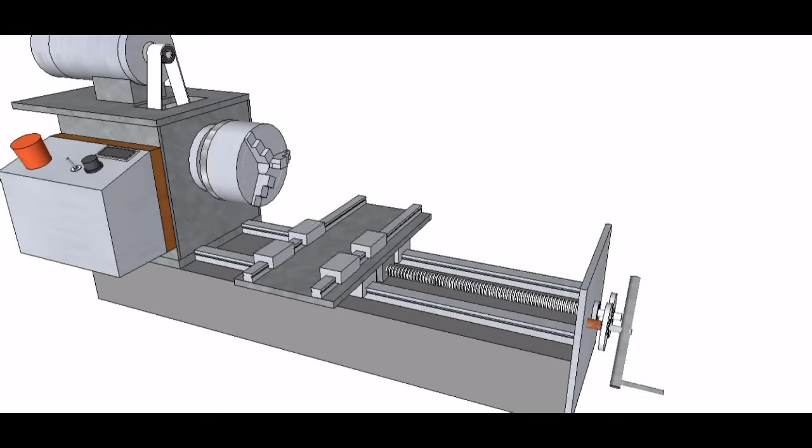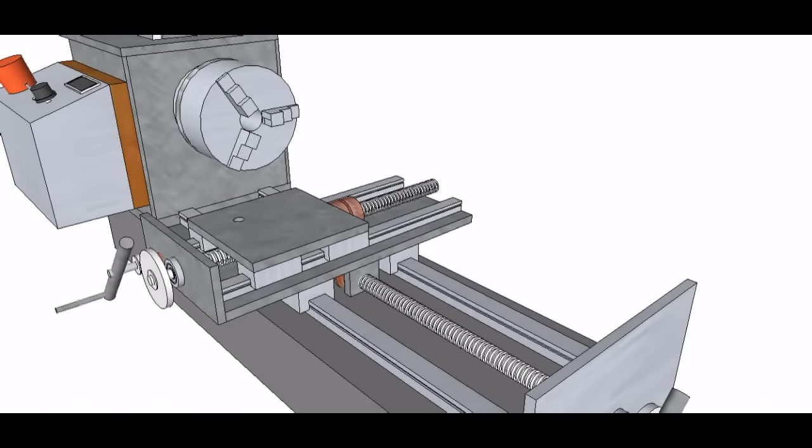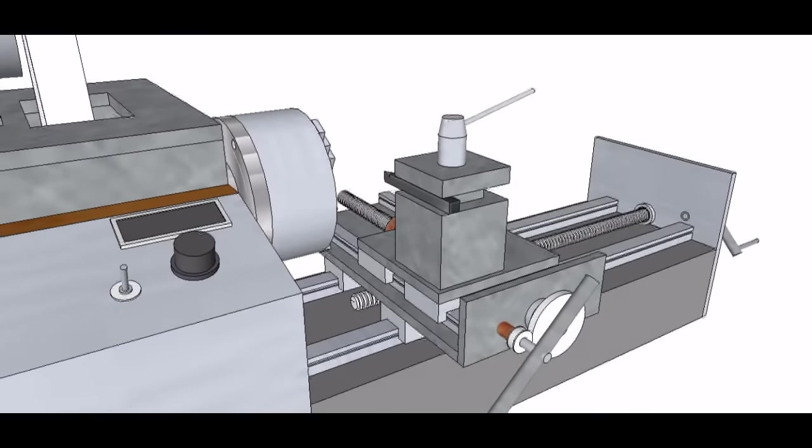The cross slide rides on 15mm linear bearing rails and four blocks, and is also moved via a lead screw. The tool post is mounted with a pivot bar on the cross slide plate.